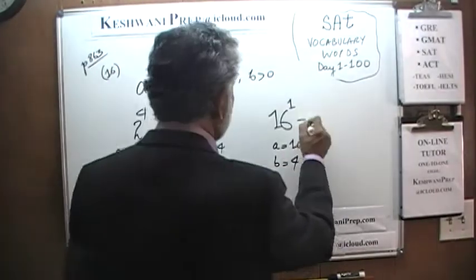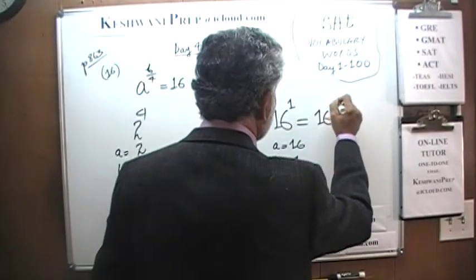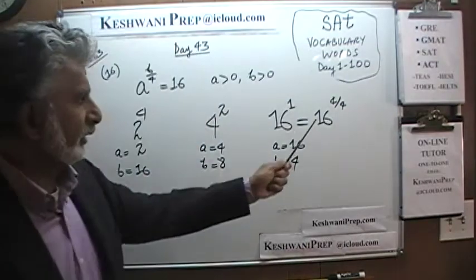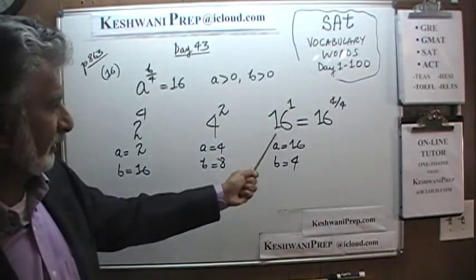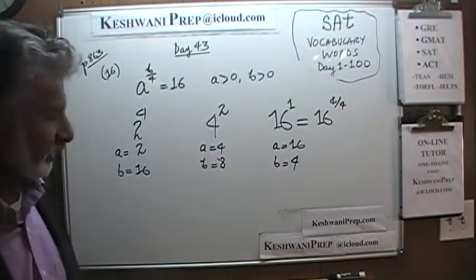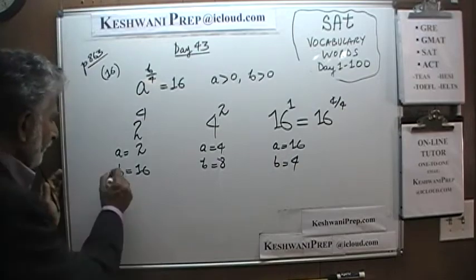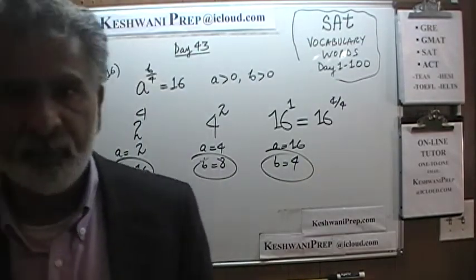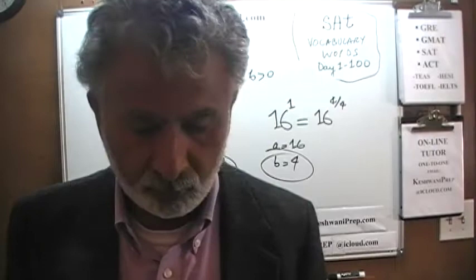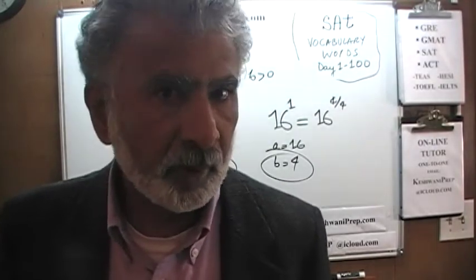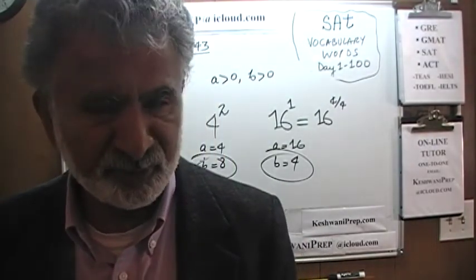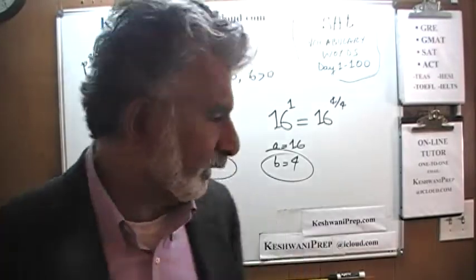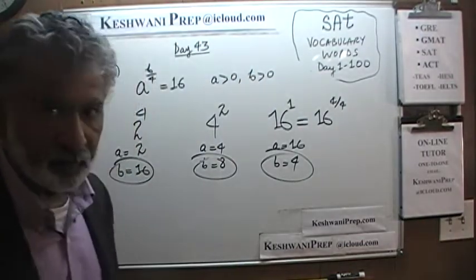For example, 16 raised to 4 over 4 will do the job nicely — 4 over 4 gives you 1, and that's 16. So there are several possibilities. In the exam, you don't want to waste your time trying to figure out all the possibilities, or even more than one — even finding two would be a waste of time. As long as you can figure out one, that's all you need. If you enter any one of these, it will do fine.